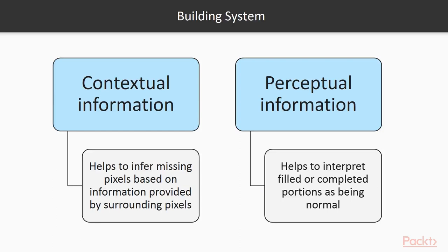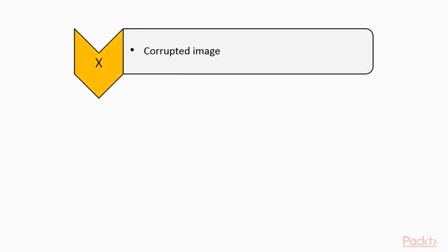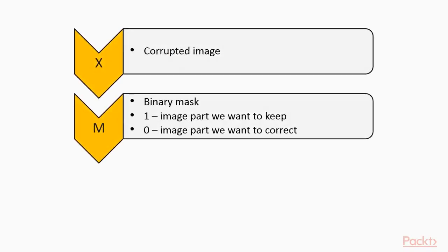Let's define some notation and loss function before diving into the steps for building an image correction system. Here, X is the corrupted image. M represents a binary mask that has a value of either 1, meaning the part of the image we want to keep, or 0, meaning the part of the image we want to complete or correct. The element-wise multiplication between the two matrices X and M returns the original part of the image.